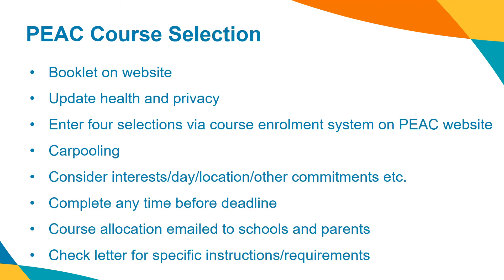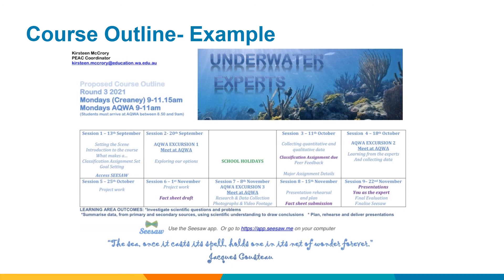In the final weeks of ITP, students will be informed that the course booklet will be available on the website. Before selecting courses, you will be prompted to update your child's health and privacy details. Four course selections need to be entered via the enrolment system. Carpooling is the same as previously outlined. Considerations regarding days, locations and other commitments need to occur before the selections are completed. Selections can be completed any time before the deadline. Course allocation will be emailed to schools and parents. Please check your invitation for specific instructions or requirements for the course your child has been allocated. During the first session of each course, students will be given a course outline which will include essential information such as dates of the sessions, contact details of the teacher and due dates for assignments. This should come home in their course file.